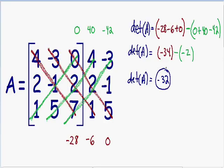One quick side note about the determinant: it is very useful when finding the inverse of a matrix. However, if the determinant is 0, then the matrix does not have an inverse — you could say the matrix is not invertible. Since our matrix A has a determinant of negative 32, which is not 0, our matrix does have an inverse, so the matrix is invertible.